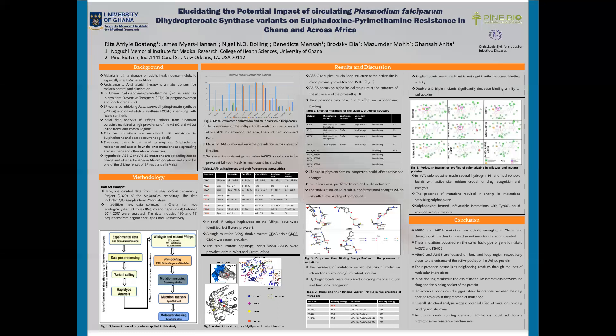We docked sulfadoxine in the active site of the wild type and mutant systems, as shown in Figure 5. The presence of mutations caused the loss of molecular interactions surrounding the protein position, and hydrogen bonds were misplaced, indicating major structural and functional recognition changes. Single mutants were predicted to not significantly decrease binding affinity, whereas double and triple mutations significantly decreased binding affinity for sulfadoxine.